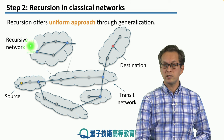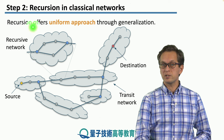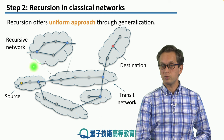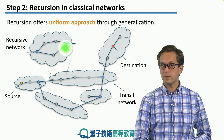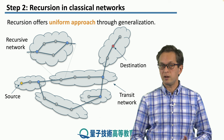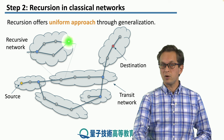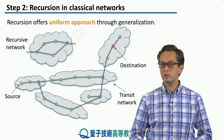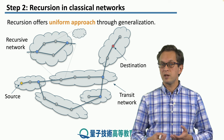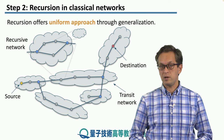For example, this node over here could actually represent an entire network. And it doesn't need to stop there — any of the nodes of this transit network could also represent a further network at a lower layer.